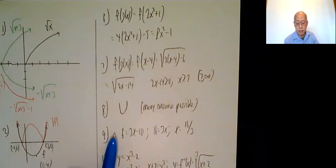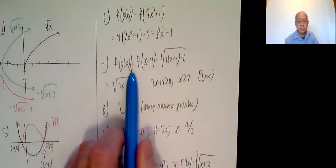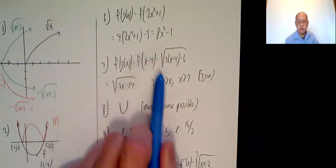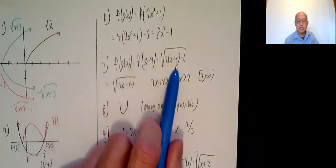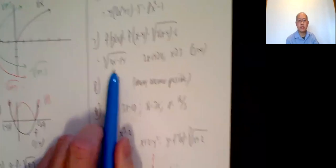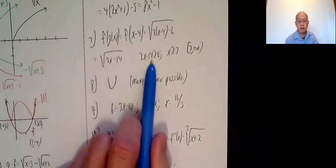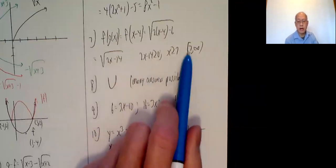7, determine the domain of f of g of x. So f of g of x is f of x minus 4. That goes into the square root function. So square root of 2, parentheses, x minus 4, minus 6. That's 2x minus 8 minus 6, which is 2x minus 14. To find a domain, you set that to be greater than or equal to 0, a little bit of algebra. x is greater than or equal to 7, or bracket 7, infinity.